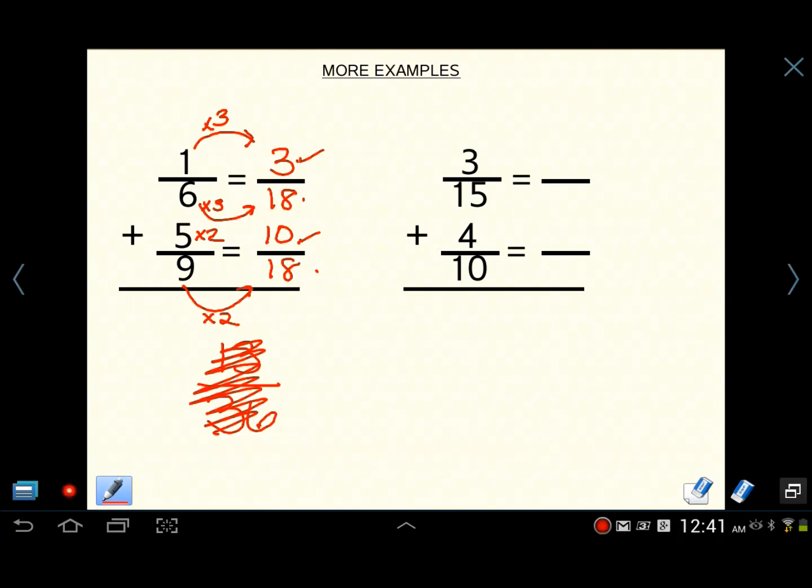This is wrong. Partly right. Three plus ten is thirteen. That was right. But you do not add denominators. Never do that. Thirteen eighteenths. That's our answer. That's in simplest form. Nothing else can be done to it.